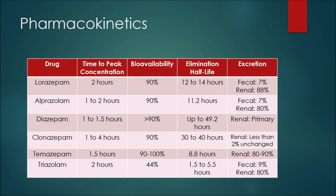Looking at clonazepam, the time to peak concentration would be anywhere between one and four hours. Bioavailability is 90 percent, and the elimination half-life of clonazepam would be 30 to 40 hours, so again we have a medication that would stay in your system for a long duration of time when compared to lorazepam and alprazolam. In terms of excretion, we have less than 2 percent unchanged renally.